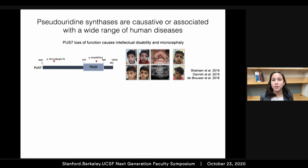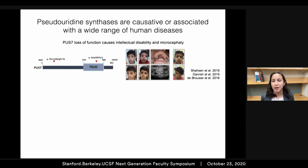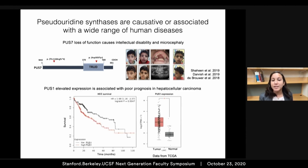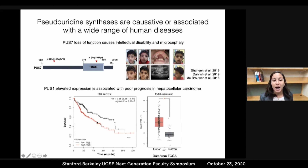I'll highlight two examples that are at the center of my talk today. For the enzyme PUS7, mutations that disrupt the catalytic activity of this enzyme have been shown to cause intellectual disability and microcephaly. Whereas high expression of the pseudouridine synthase PUS1 is observed in hepatocellular carcinoma tumors compared to normal tissue, and high expression of PUS1 is correlated with poor prognosis in hepatocellular carcinoma.